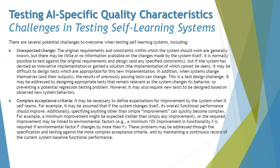The next challenge is complex acceptance criteria. The acceptance criteria are not straightforward; it may be necessary to define expectations for improvement when the system self-learns. For example, if the system changes itself, its overall functional performance should improve. Specifying anything beyond simple improvement can quickly become complex — for example, a minimum improvement might be expected, or the required improvement may be linked to environmental factors, like 'minimum 10% improvement in functionality X is required if environmental factor F changes by more than Y.'